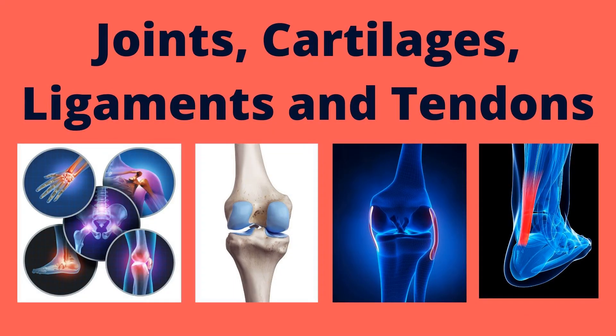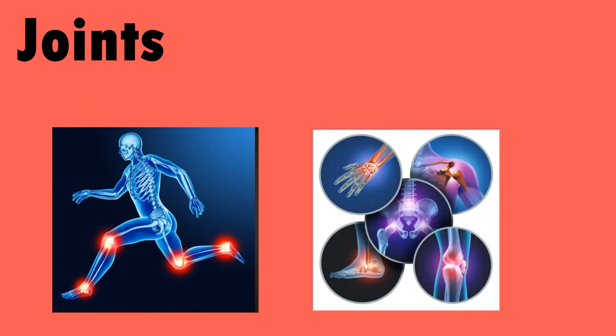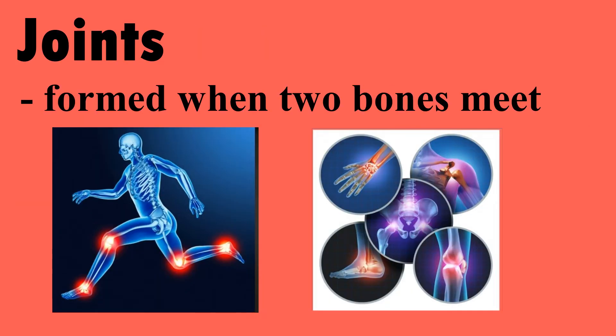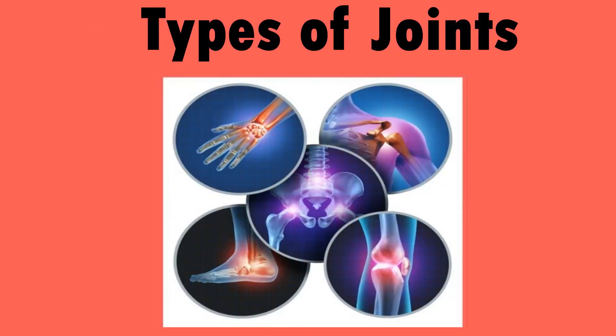Joints, cartilages, ligaments, and tendons. Joints are formed when two bones meet. There are different types of joints.